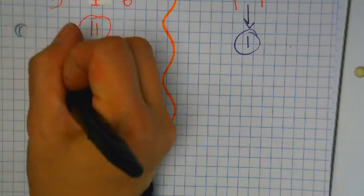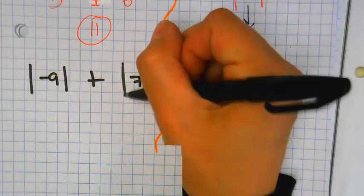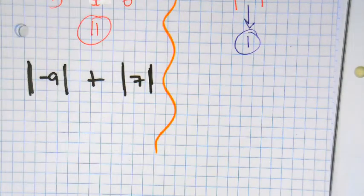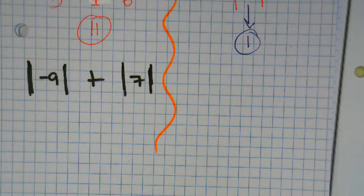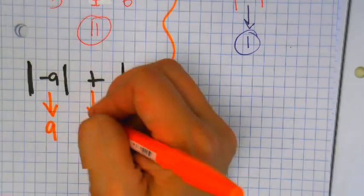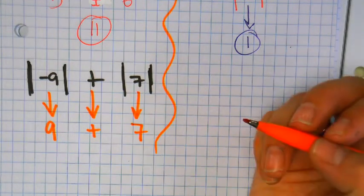Alright, here we go. Absolute value of negative nine plus the absolute value of seven. Make sure your bars are bigger than your numbers. What's the absolute value of negative nine? Nine. Drop it down. You get nine. Drop down the plus sign. What's the absolute value of seven? Seven. Sixteen.